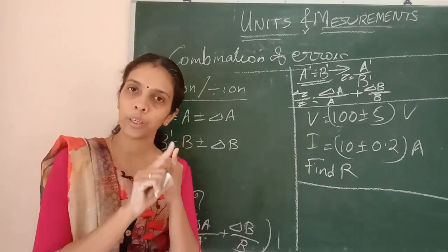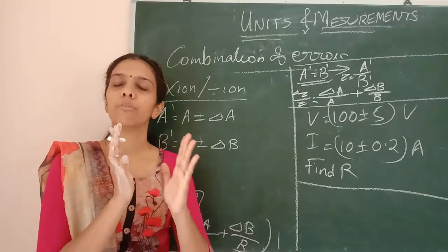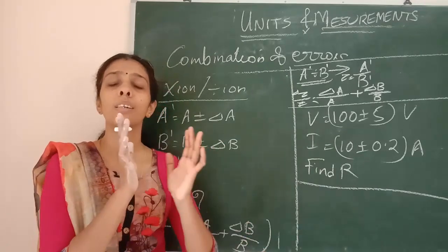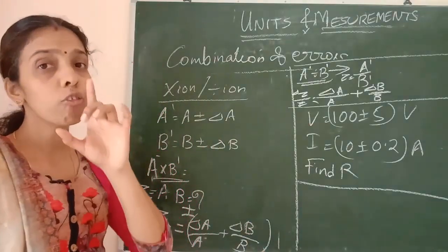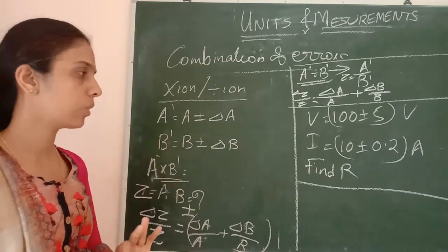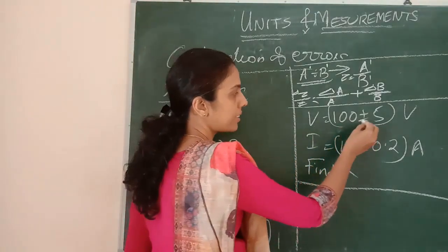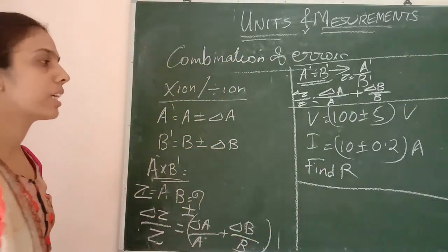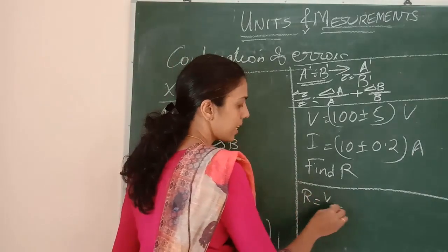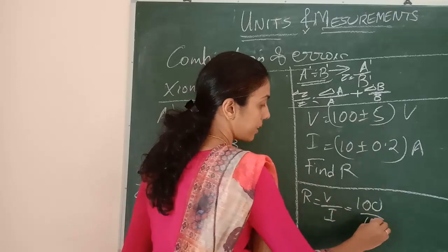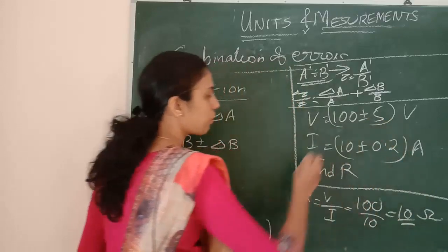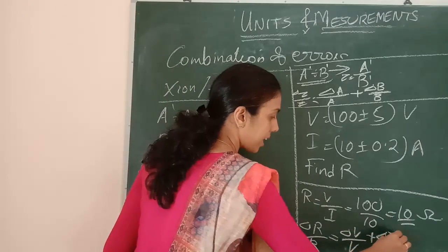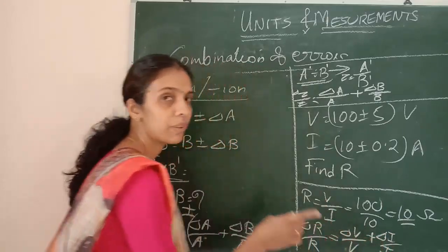So whether doing addition, subtraction, multiplication, or division — if doing addition or subtraction, errors will add up; if doing multiplication or division, the relative errors of the product or quotient will equal the sum of the relative errors. Here is a question: V equals 100 plus or minus 5 volt, I equals 10 plus or minus 0.2 ampere. Find the resistance.